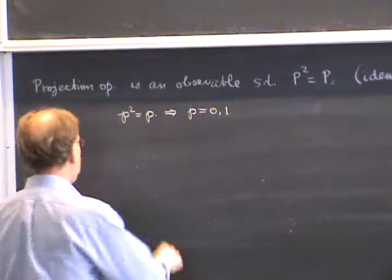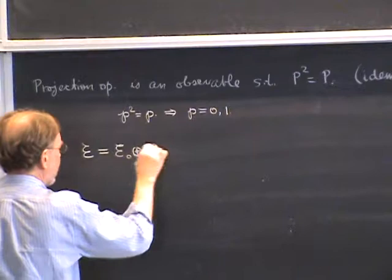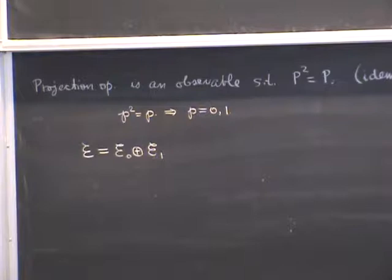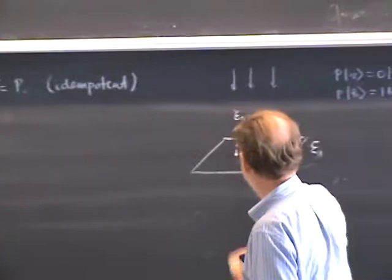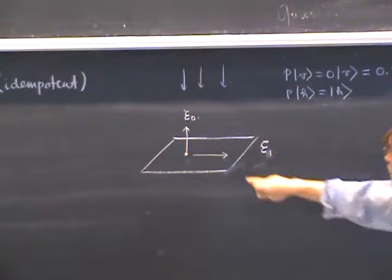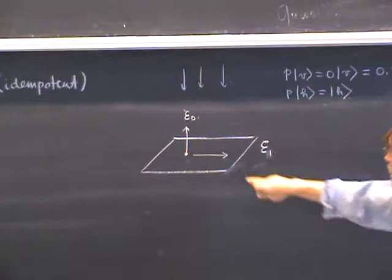Because there are only two eigenspaces, the Hilbert space decomposes into the direct sum of the zero-eigenspace and the one-eigenspace. In the shadow image, the one-space is the horizontal space and the zero-space is the vertical space. The one-space consists of vectors unchanged by the projector; the zero-space consists of vectors that get annihilated. This always holds for projection operators.